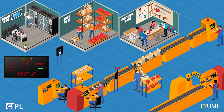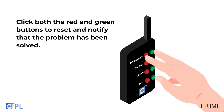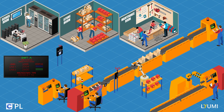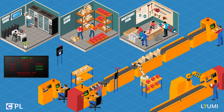After solving the issue, the worker standing near the conveyor belt clicks the red problem-labeled button and the green acknowledgement-labeled button on the Undawn station to notify management that the problem has been resolved. With everything sorted, the production line can resume without any further delays.